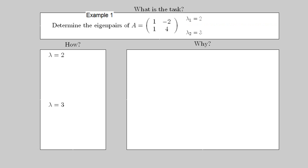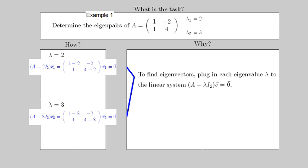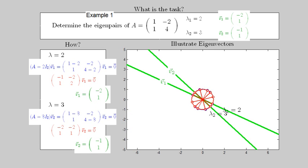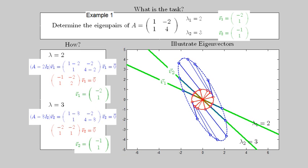To find the eigenvectors, substitute each eigenvalue into the linear system A minus lambda I times V. Solving for V produces a line of solutions in the direction of minus 2, 1 and minus 1, 1, respectively. The image of any vector on one of these green lines remains on that line.